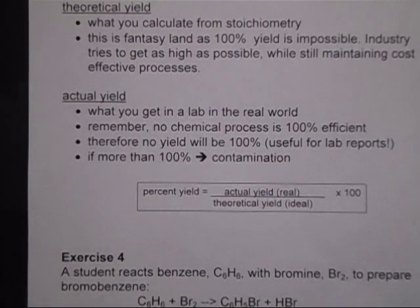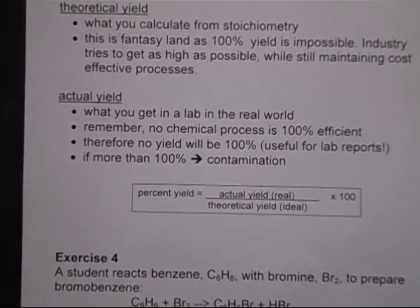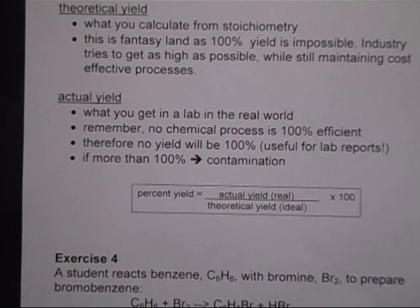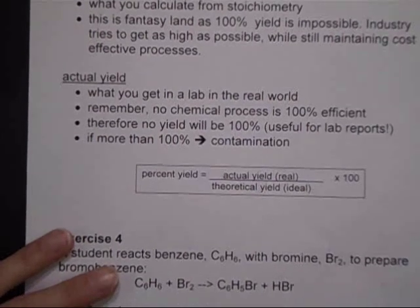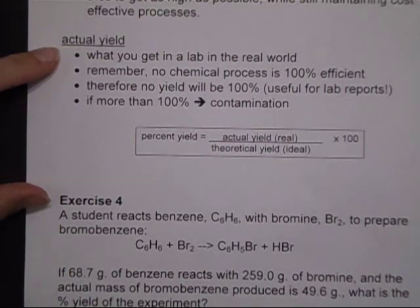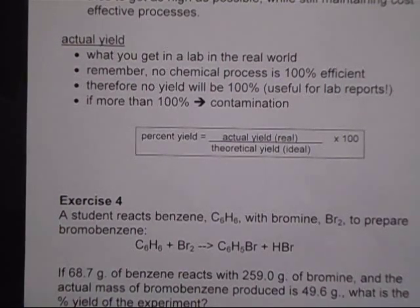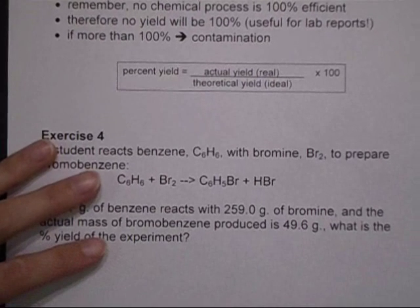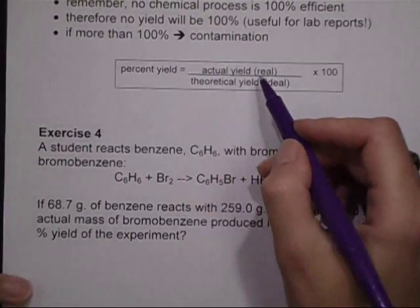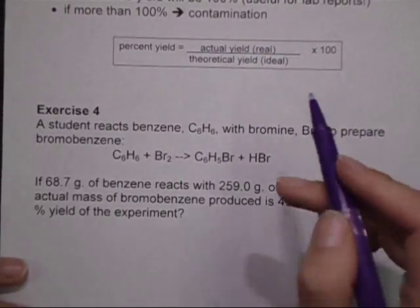The last section of the stoichiometry notes is dealing with percent yield. The theoretical yield would be if a reaction went entirely to completion, meaning all of it reacted which never happens, if a reaction were perfect which also pretty much never happens, and it is what we calculate.